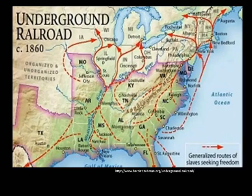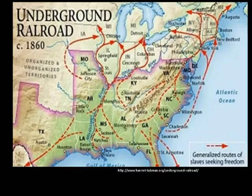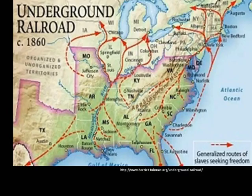To escape from the harsh way of life and punishment, many slaves formed a plan to run away to a free state where slavery was prohibited. Runaway slaves were often caught by their masters, brought back to the slave state, and punished severely. Sometimes they were even killed.